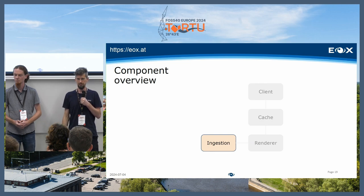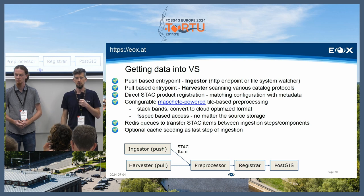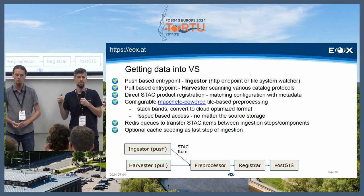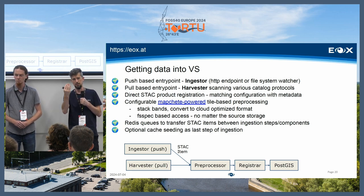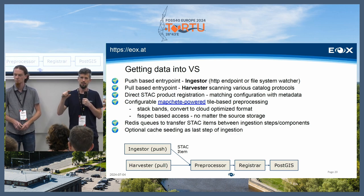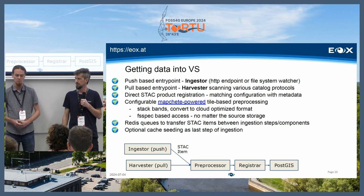The last part is how to actually get data in — the ingestion chain. It consists of multiple parts you can pick and choose. We have two mechanisms: the push-based ingestors, where you simply push items in and they get registered; and the harvesters, which pull from upstream sources like OpenSearch or STAC APIs one by one into the system. If necessary, we also have a preprocessing chain where we can make, for example, cloud optimized GeoTIFFs to improve rendering performance. Then it goes through the registrar which registers it to the database. We also have preseeding facilities to have certain zoom levels already in the cache for clients to use.